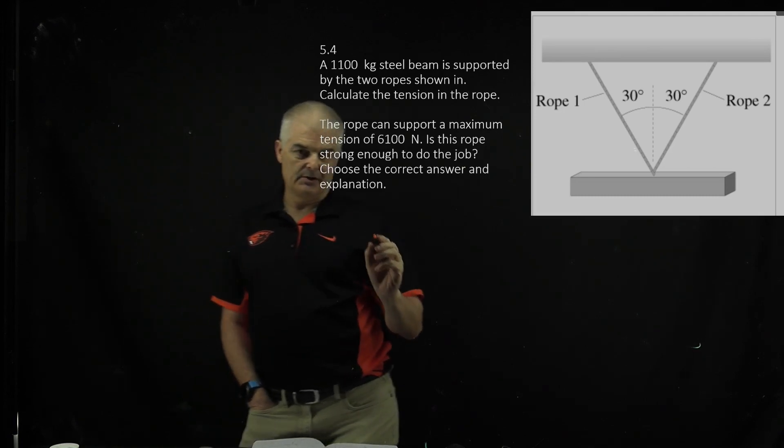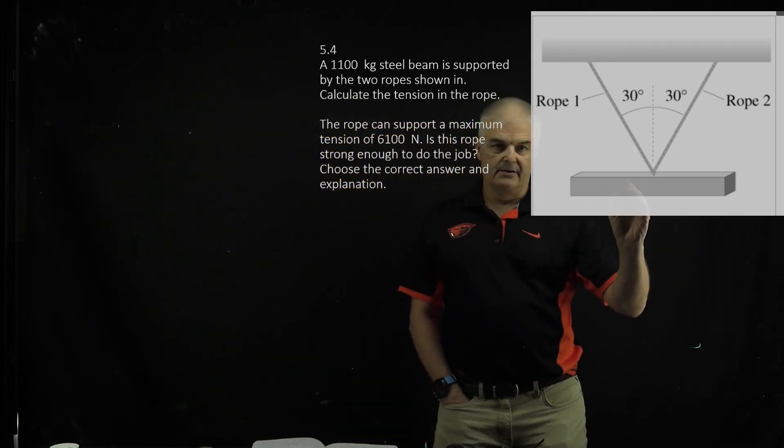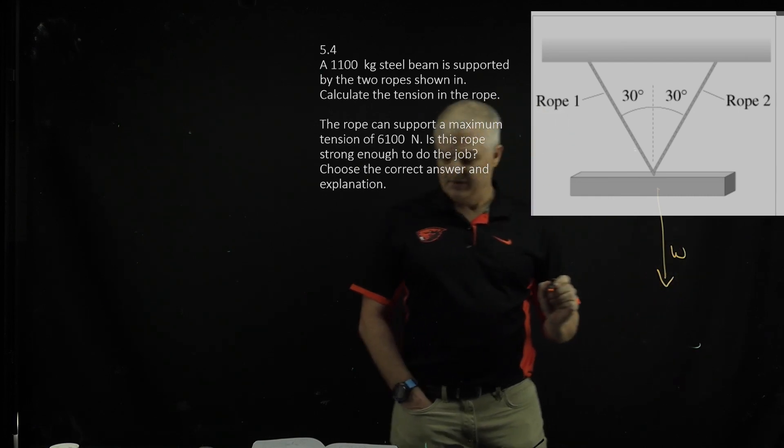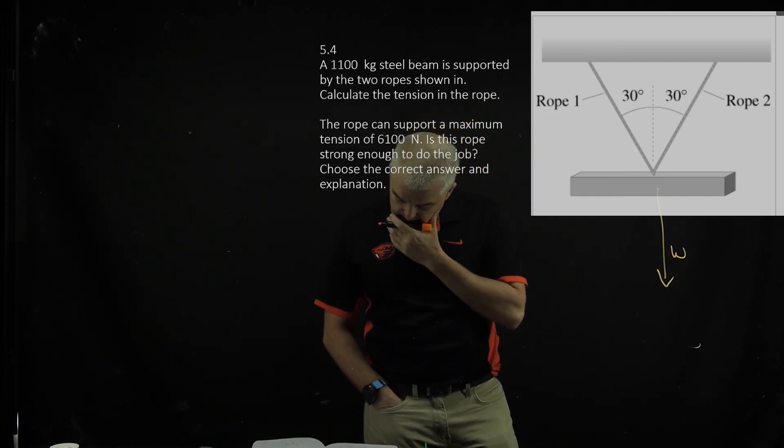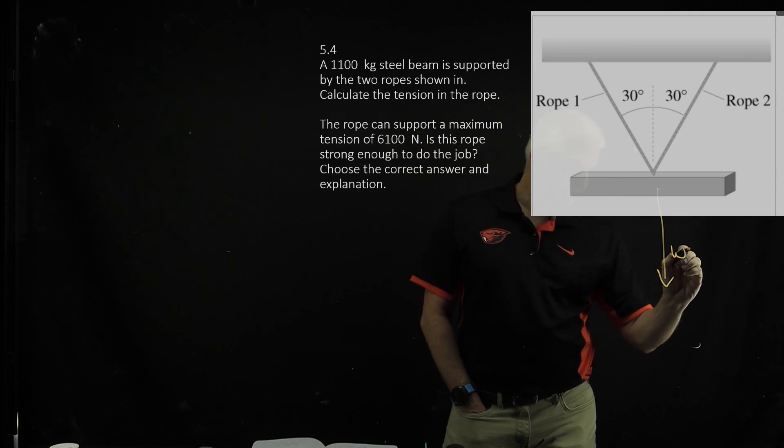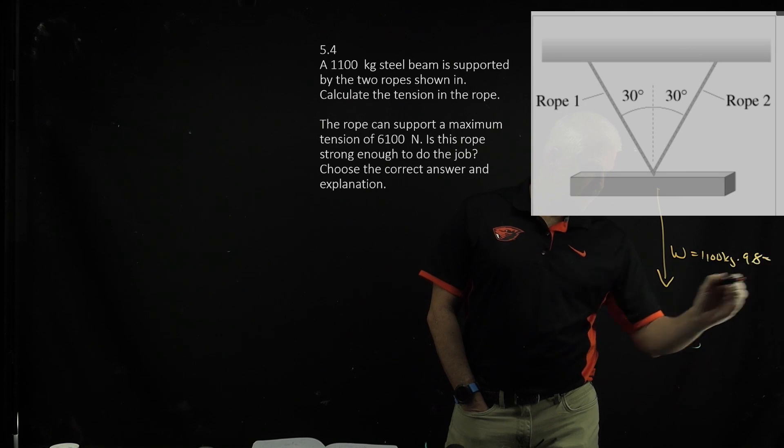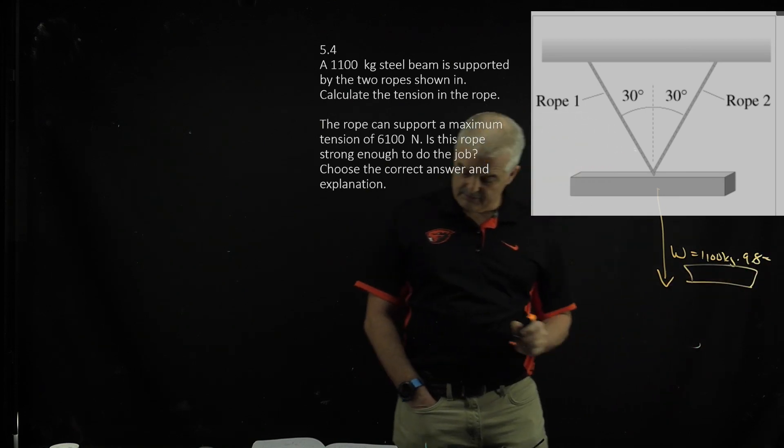What makes this nice about this question is that when we're right here, the force down is the weight of the object. And what did they give us? The weight of the object was 1,100 kilograms times 9.8, and that's going to give you your weight. You can figure out what that's going to be.